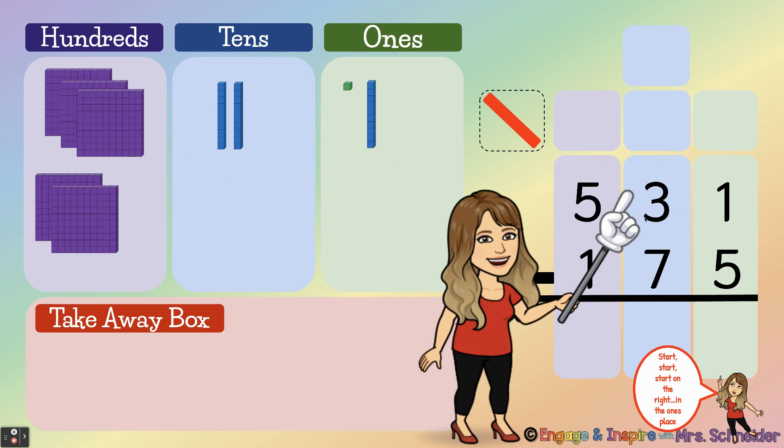Look, do I still have three tens in my tens place? No I don't. So I'm going to cross out that three because I don't have three tens anymore. I took one over here, right? So how many tens do I have left there? Two. So I'm going to change that three to a two.